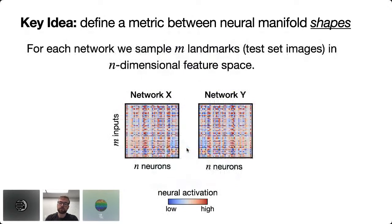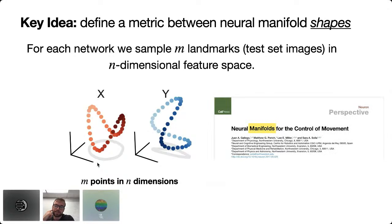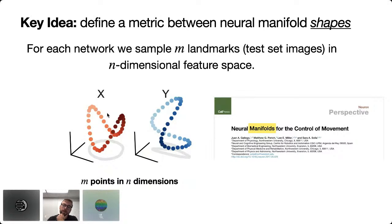Here we have two networks X and Y, with hidden layer activations sampled over m inputs. If there are n neurons in each network, we visualize these matrices as m points in an n-dimensional space — each coordinate axis is a neuron's firing rate and each point is the network's response to a different input. This connects to work on neural manifolds: continuously varying the input traces out a low-dimensional manifold, and we want to quantify the similarity in the shape of these point clouds.